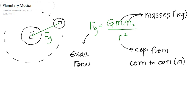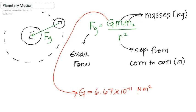G is Newton's gravitational constant and it is 6.67 times 10 to the negative 11, and it is in Newton meters squared per kilogram squared.